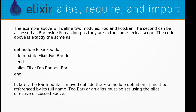The code above is exactly the same as: defmodule Elixir.Foo do and defmodule Elixir.Foo.Bar — because Bar is inside the Foo module, and then we can make an alias of Elixir.Foo.Bar as Bar. If later the Bar module is moved outside the Foo module definition, it must be referenced by its full name Foo.Bar, or an alias must be set using the alias directive.